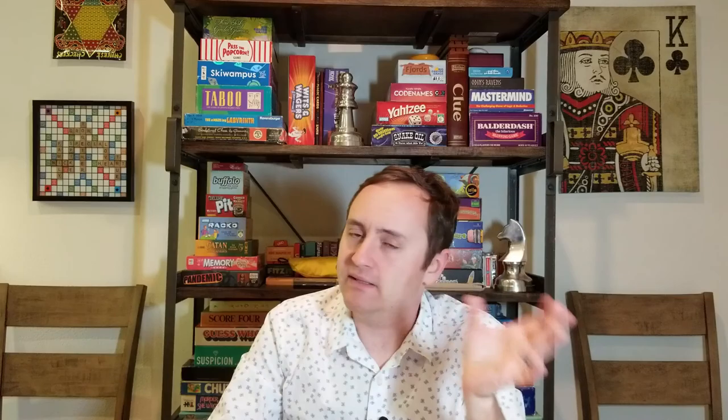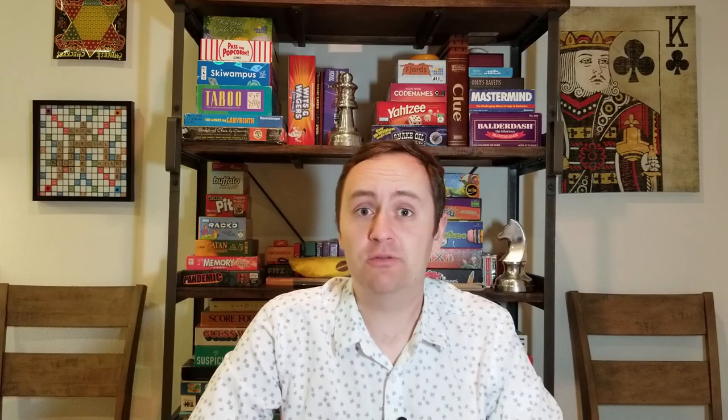Marginal benefits and costs are distinct from total benefits and costs. The total amount of benefit you get from something is important and good to know, but it's not the same as the marginal benefit on which you actually make your decision. We're saying your decision is made on the basis of your marginal benefits and marginal costs. The cost-benefit principle — choose the option for which benefits most exceed costs — translates to setting marginal benefit equal to marginal cost. The incentive principle — people follow incentives — translates to people setting marginal benefits equal to marginal costs.